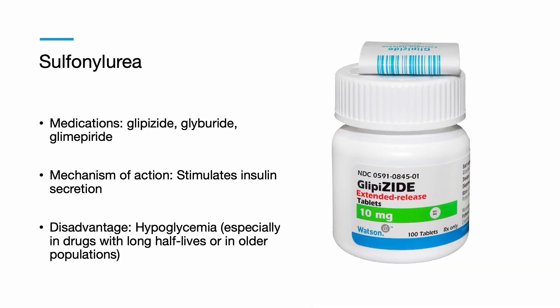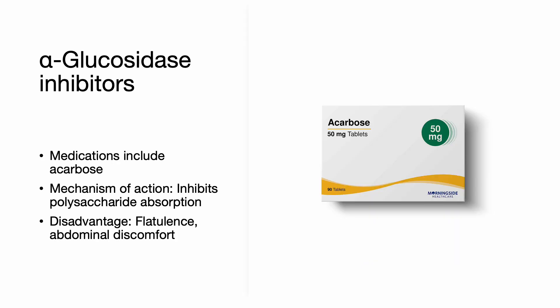The most common sulfonylurea medications include glipizide, glyburide, and glimepiride. Their mechanism of action stimulates insulin secretion. A well-known common side effect is hypoglycemia, especially with drugs with long half-lives or in older patients. Alpha-glucosidase inhibitors, such as acarbose, are a previous common medication for diabetes but are no longer recommended. Their mechanism of action includes inhibition of polysaccharide absorption, and disadvantages include flatulence and abdominal discomfort.